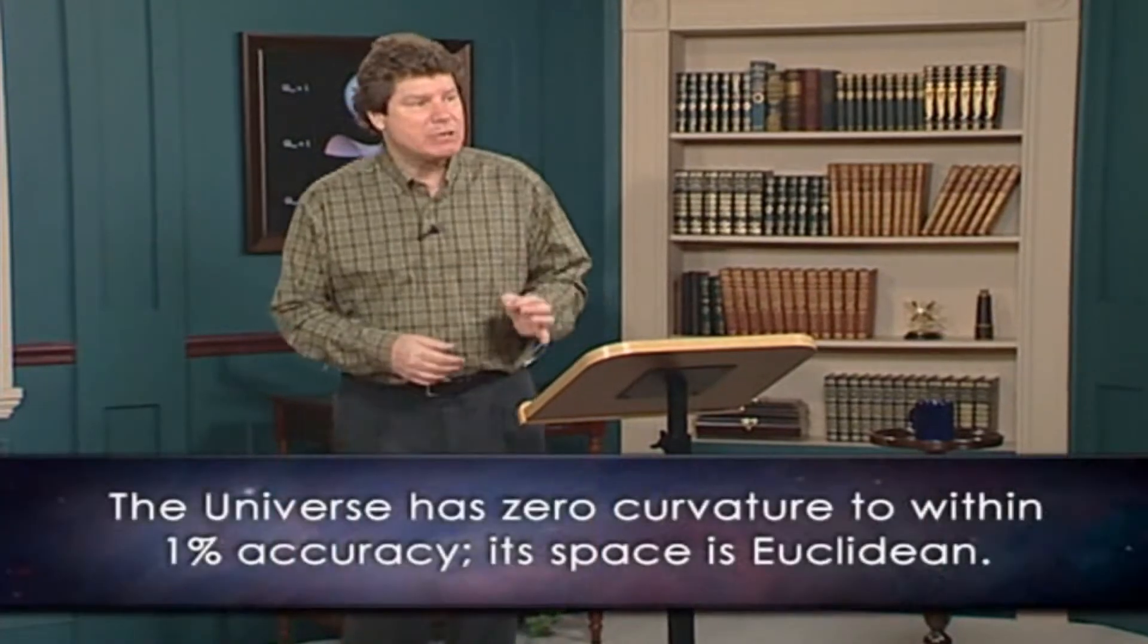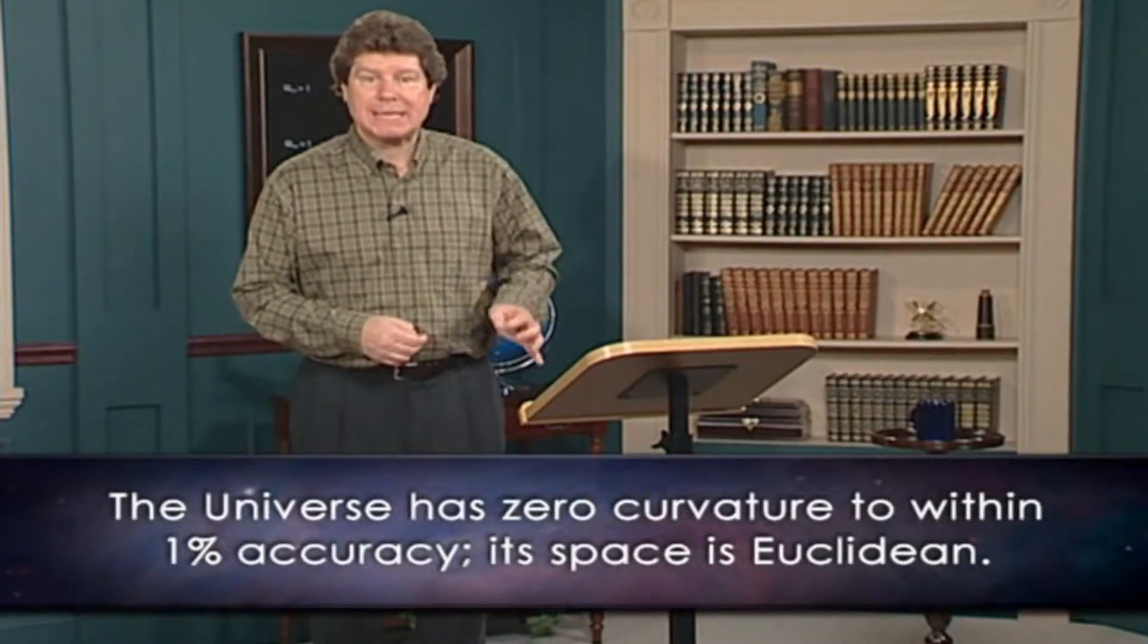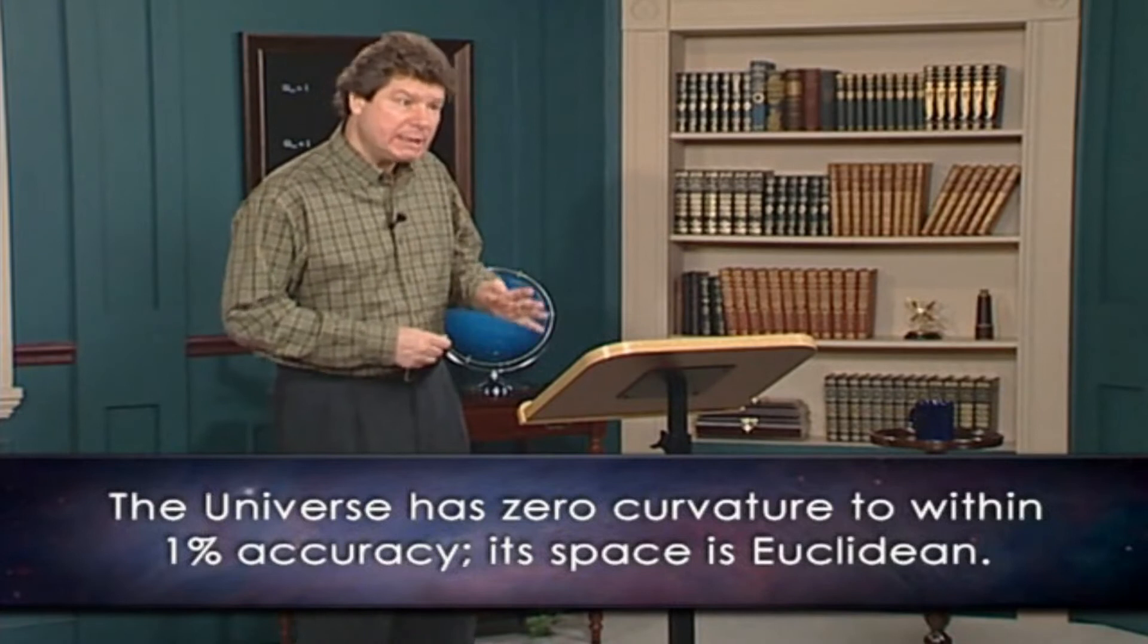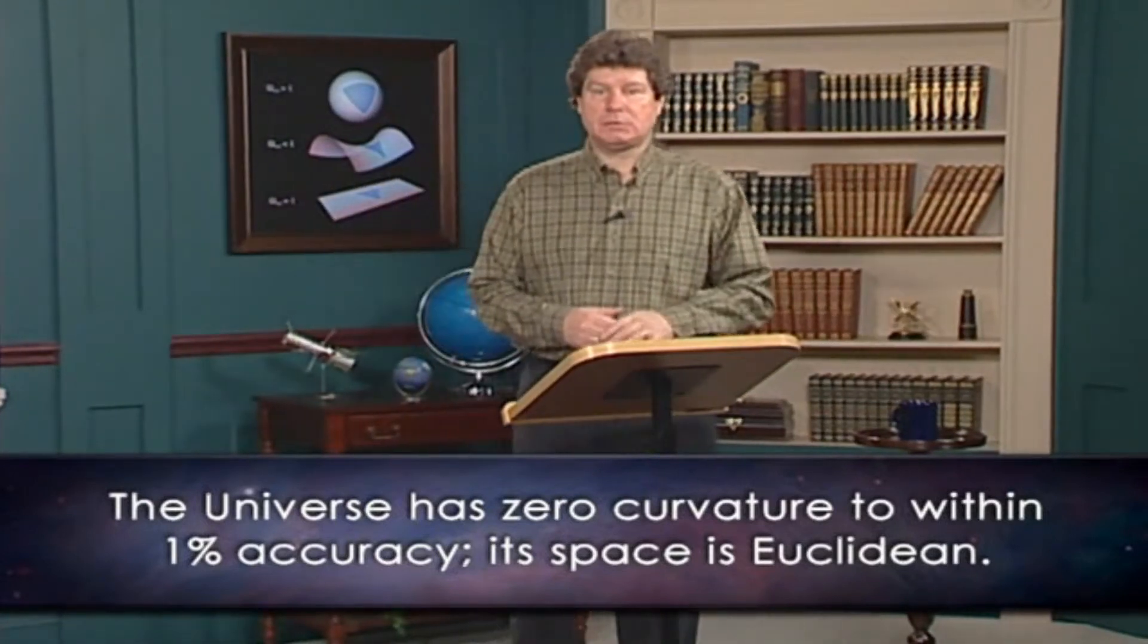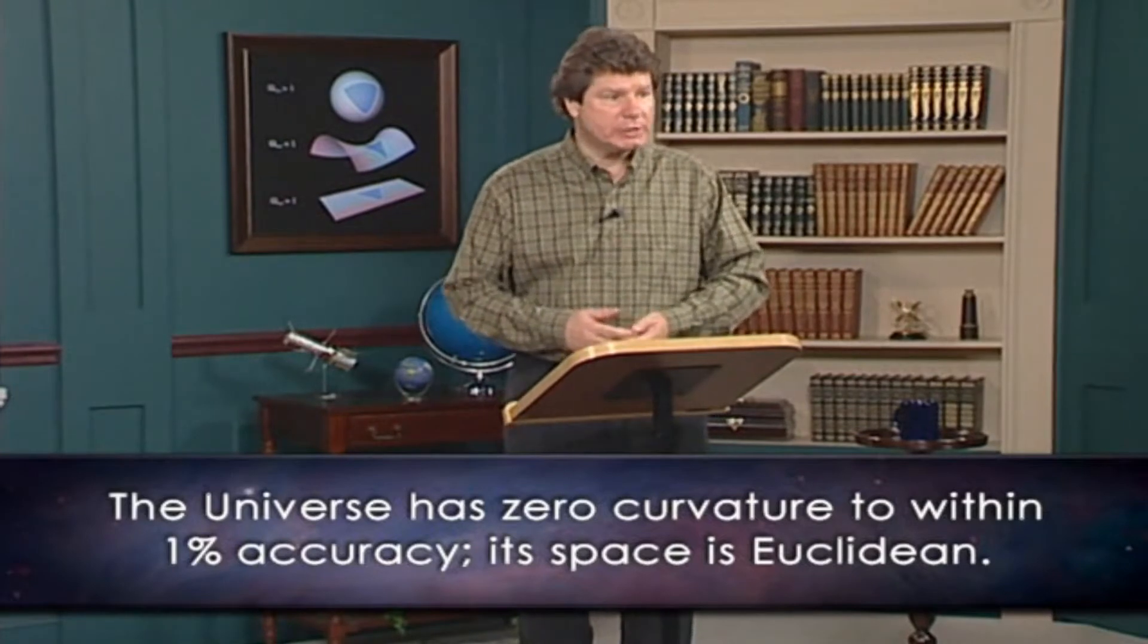The answer? It has zero curvature to within 1% accuracy. Its space is Euclidean. Giant triangles do have angles that add up to 180 degrees.